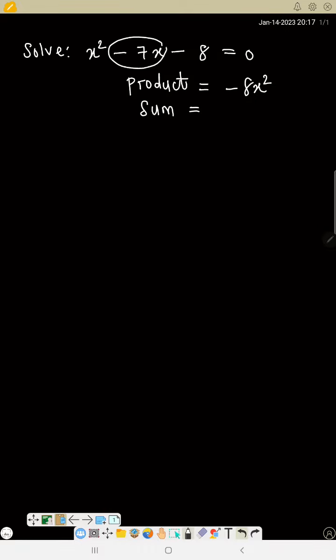Now the middle number represents the sum. So the middle number here is minus 7x. Now what are the two numbers that if you multiply, you will get minus 8, and if you add, you will get minus 7?